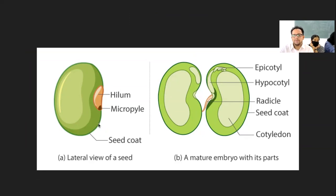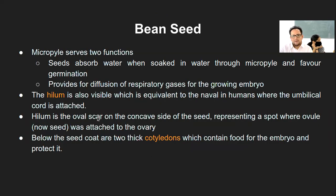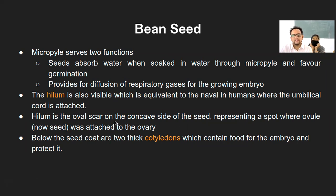So that is the hilum portion, micropyle portion, seed coat — that is testa and tegmen part. Hilum is the oval scar on the concave side of the seed, that is the inner part of the seed, and it is actually indicating the part where it is attached to the ovule.